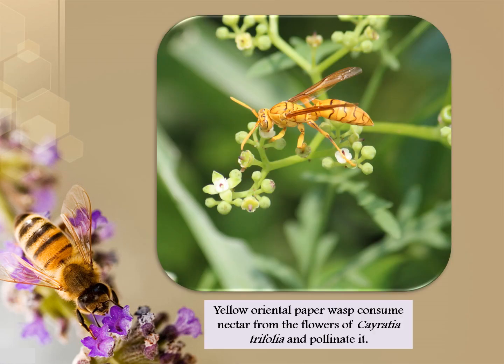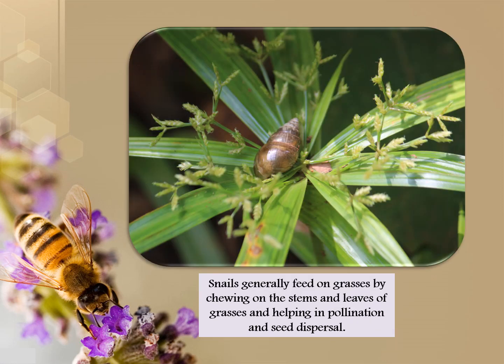Yellow Oriental paper wasps consume nectar from the flowers of Kynesia trifolia and pollinate it. Snails generally feed on grasses by chewing on the stems and leaves, and also help in pollination and seed dispersal.